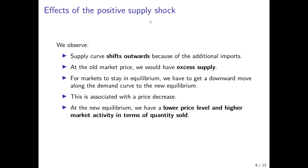To summarize verbally: the trade agreement is enacted, more cars can be imported, and supply increases. This shifts the supply curve outwards. If the price of cars stayed the same, we would have excess supply, which builds downward pressure on the market price. The market price decreases and we move along the demand curve to the new equilibrium, which is associated with a lower price and higher market activity in terms of quantity sold.